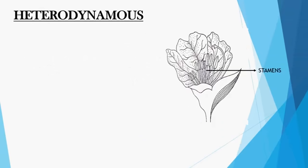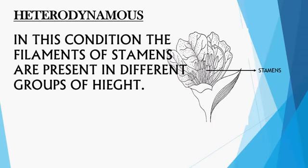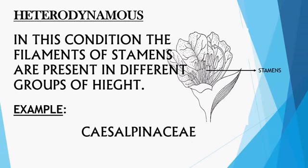Another type is heterodynamous. In this condition, the filaments of the stamens are present in different groups of heights. In the photograph, some group of stamens are shortest, another group is taller, and a third group of three stamens is the tallest. So the stamens are present in different groups of heights. This condition is called heterodynamous. Example: Caesalpiniaceae.